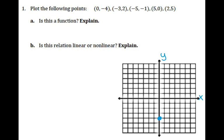(-3, 2): I'm going to move to the left 3 units and up 2. (-5, -1): move to the left 5 units, down 1 unit. (5, 0): move to the right 5 units — 1, 2, 3, 4, 5 — and not moving up or down since the y-value is 0. And (2, 5): move to the right 2 and then up 5 units. So here are all of my points.